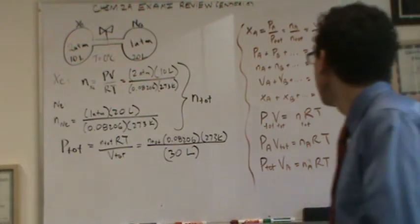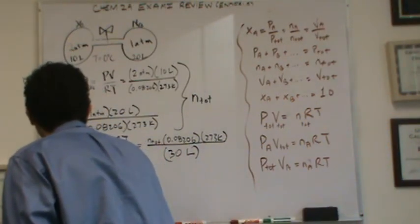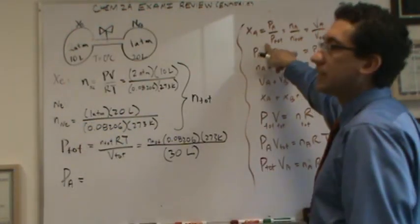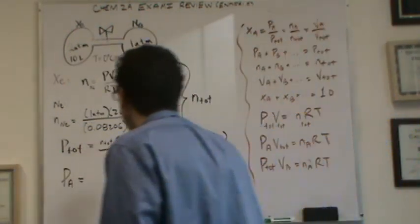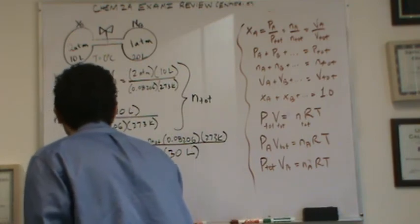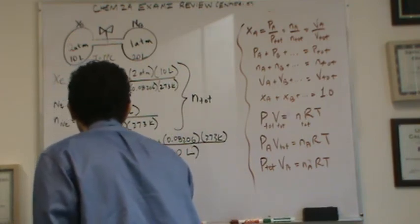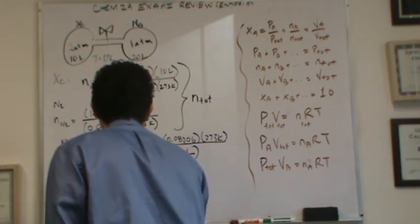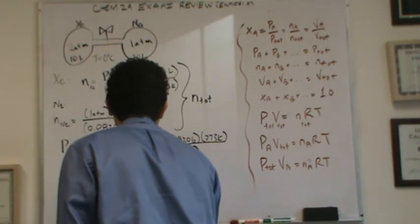So you can actually calculate that, and then when you're going to write for the partial pressures, the partial pressure of A is the mole fraction of A times the total pressure, and the mole fraction is the moles of A over the total moles times P total.